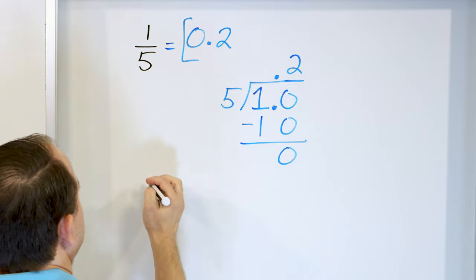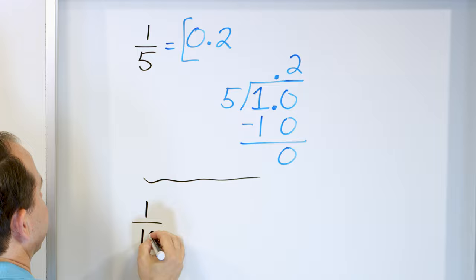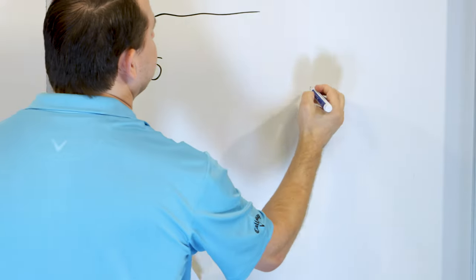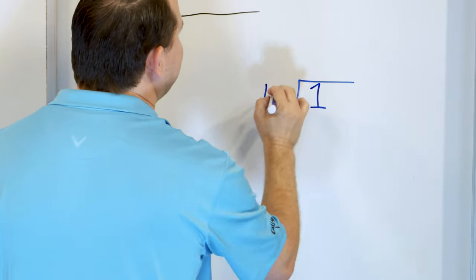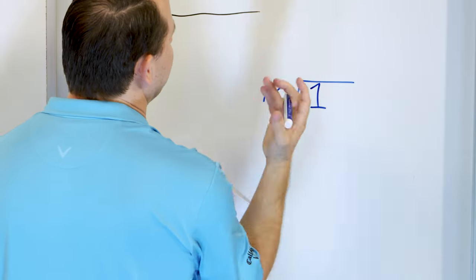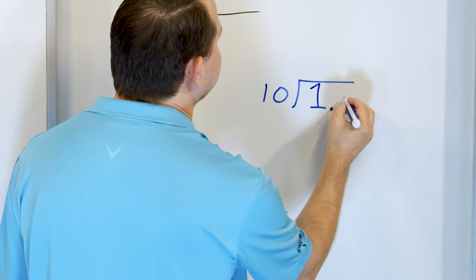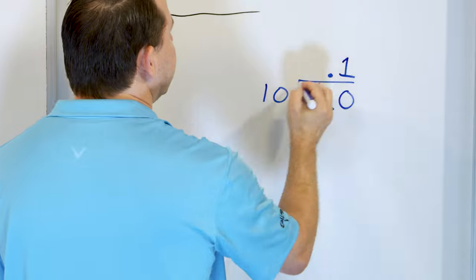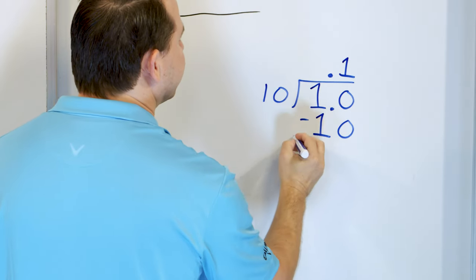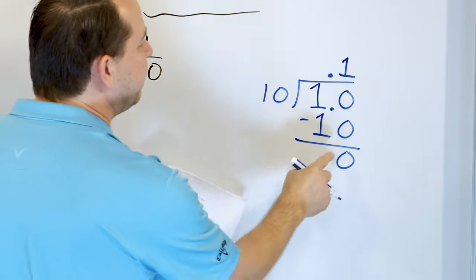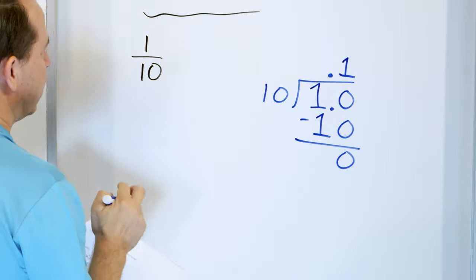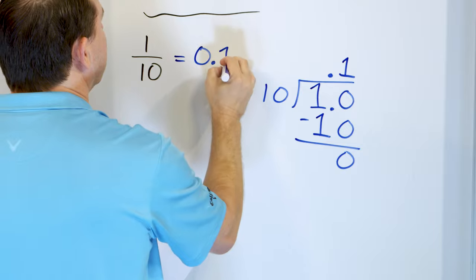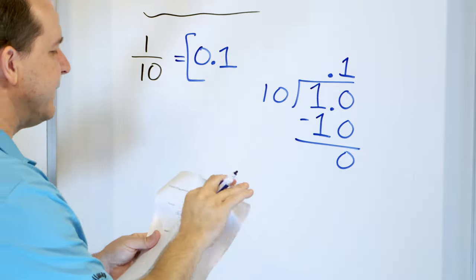Let's look at the fraction one tenth — it means one divided by 10. Can 10 go into one? No. So we drop a decimal and a zero, and our decimal goes above. 10 times one is 10. Multiply, subtract, and the remainder is zero. We stop immediately. The fraction one tenth is equal to 0.1.